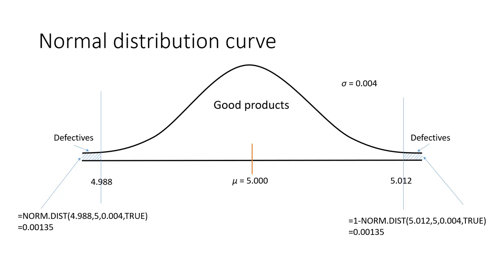The other type of variation is special cause variation. We call it special cause because the causes responsible are assignable — we can assign the variation to a certain activity, person, or malfunctioning equipment. If we correct that activity, train that employee, or fix that equipment, we can eliminate the special cause of variation.